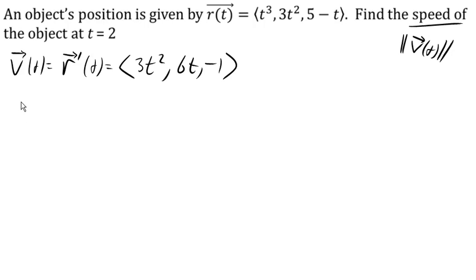And then speed will be the magnitude of that velocity. Now in this case, we could make our lives a little easier by evaluating our velocity function first. But just for the sake of fun and argument, we'll go ahead and find the magnitude in general here and then evaluate it at 2.